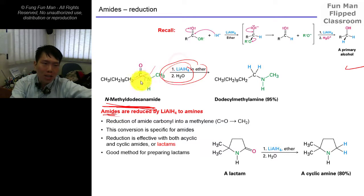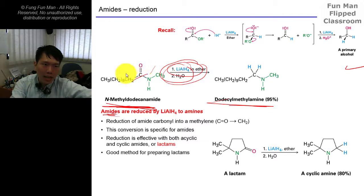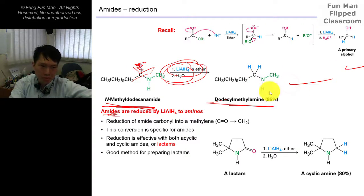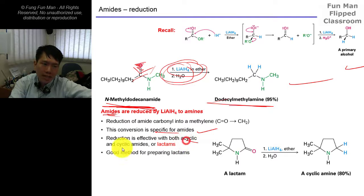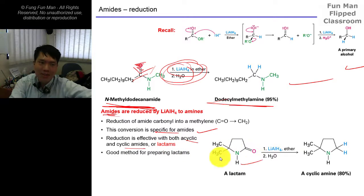When you throw lithium aluminum hydride at an ester, you get a primary alcohol, but when you throw the same reagent at an amide, you get back the amine. Simply put, you kick out the oxygen and push hydrogen through - that's all. This conversion is specific to amides. This reduction is very effective for both acyclic and cyclic amides. Cyclic amides are called lactams.